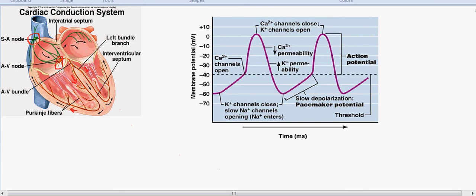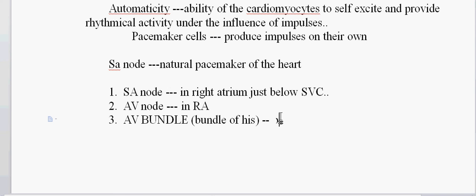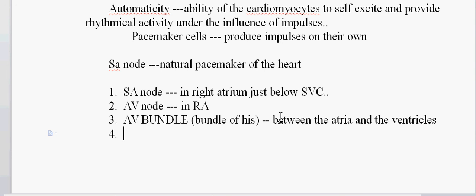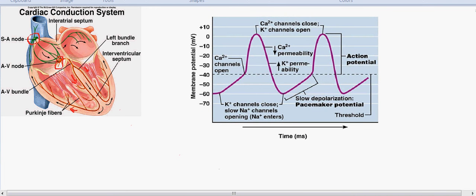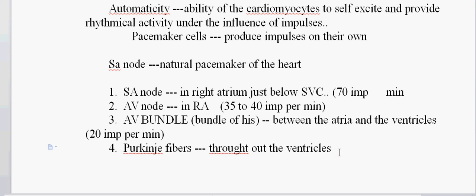The AV node is present in the right atrium. The atrioventricular bundle, also called the bundle of His, is located between the atria and the ventricles — exactly in the atrioventricular space. The bundle of His has two branches which extend across the myocardial space toward the Purkinje fibers.